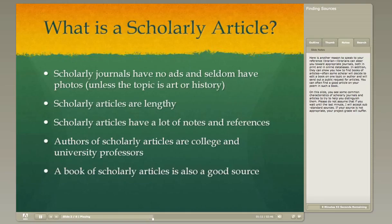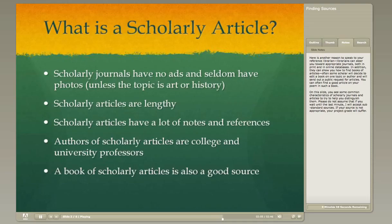Scholarly journals have no ads and few pictures — maybe a topic like art or history might have some photos or images, but mostly scholarly journals look pretty boring, just a lot of writing, even if they're online. Scholarly articles are lengthy, and length depends on the discipline. In some sciences, you might find articles that are six to ten pages long, whereas in the humanities they might run to 25 to 30 pages. In English, a five to six page article would probably not be acceptable — that would just be a note, not a regular article.